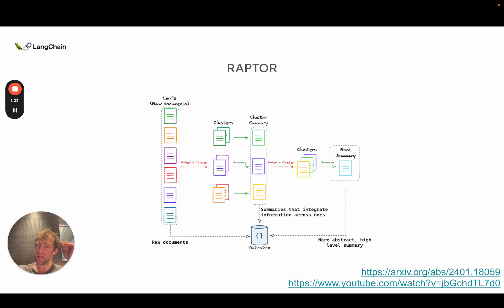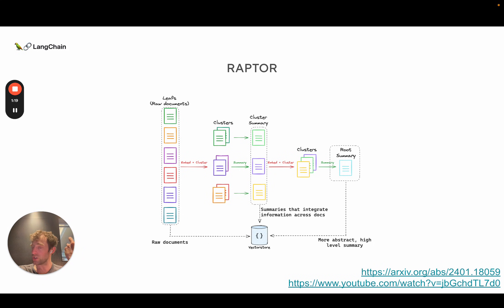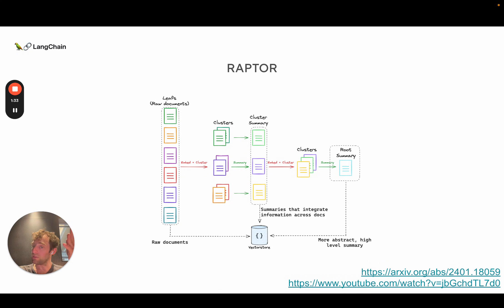There's a challenge in retrieval in that typically when you do K nearest neighbors retrieval, you're fetching some number of chunks. But what if you have a question that requires information across five, six, or more different chunks, which may exceed the K parameter in your retrieval? When you typically do retrieval, you might set K to three, retrieving three chunks from your vector store — but a high-level question could benefit from information across more than three.